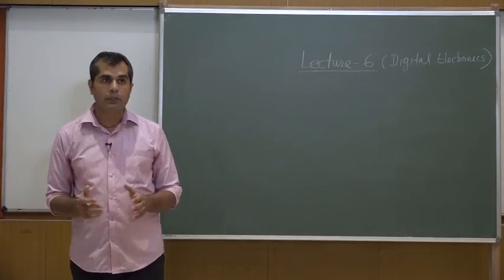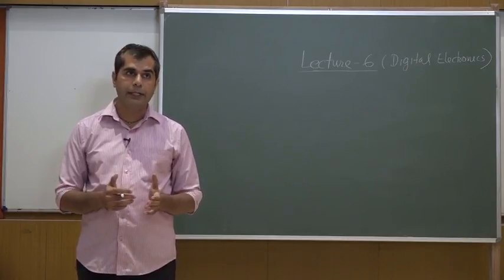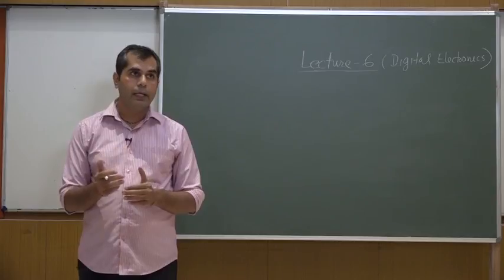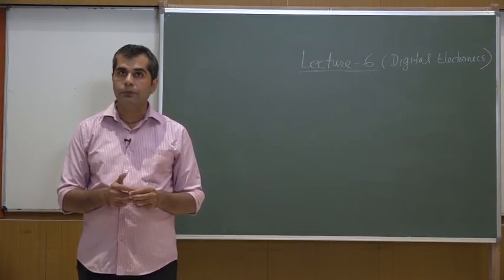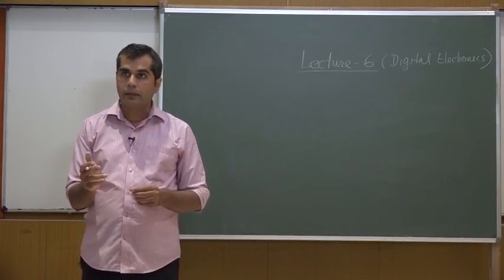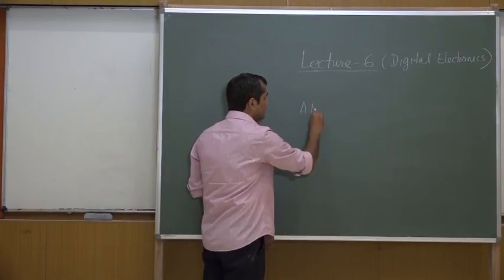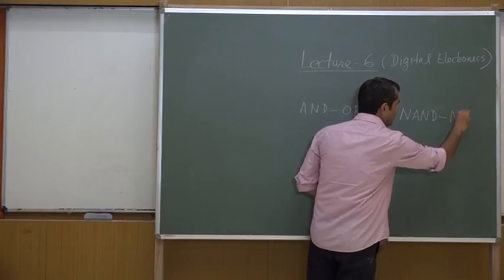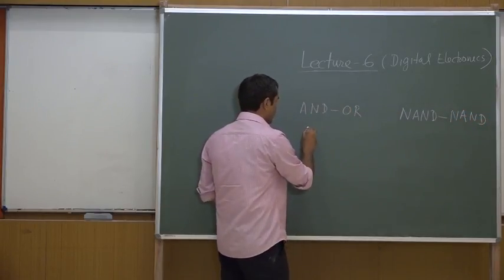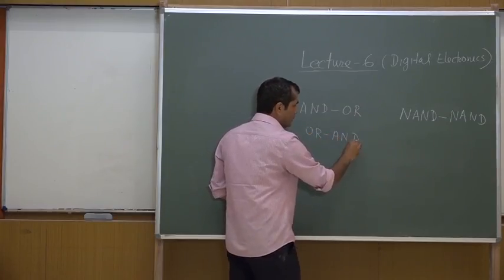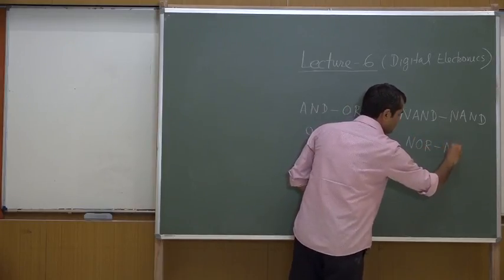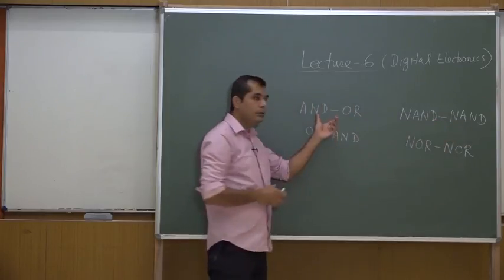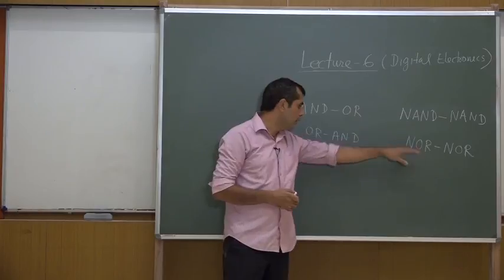In the previous class, I told you that Boolean functions can be implemented using logic gates either by choosing AND-OR combination or OR-AND combination. There is an alternative way of implementing a logic function: we use NAND-NAND in place of AND-OR combination, and similarly for OR-AND combination we can also use NOR-NOR combinations. I will show you how NAND-NAND is equivalent to AND-OR, and similarly NOR-NOR is equivalent to OR-AND.